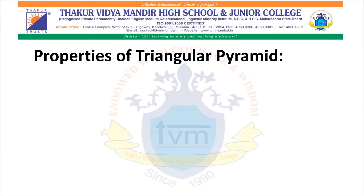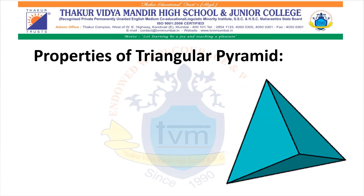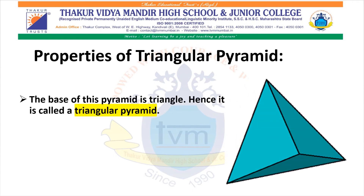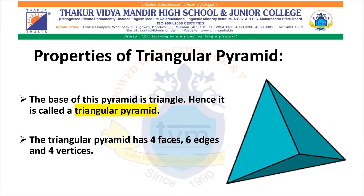Properties of Triangular Pyramid: The base of this pyramid is a triangle, hence it is called a triangular pyramid. The triangular pyramid has 4 faces, 6 edges and 4 vertices.